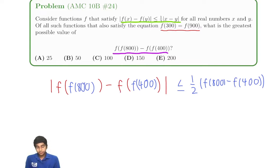Of all such functions that also satisfy the equation f(300) equals f(900). Now, we've got this condition here. First of all, we've got this, right? And maybe, aha, we can see that we've got another f(x) minus f(y). So we can plug it in again.